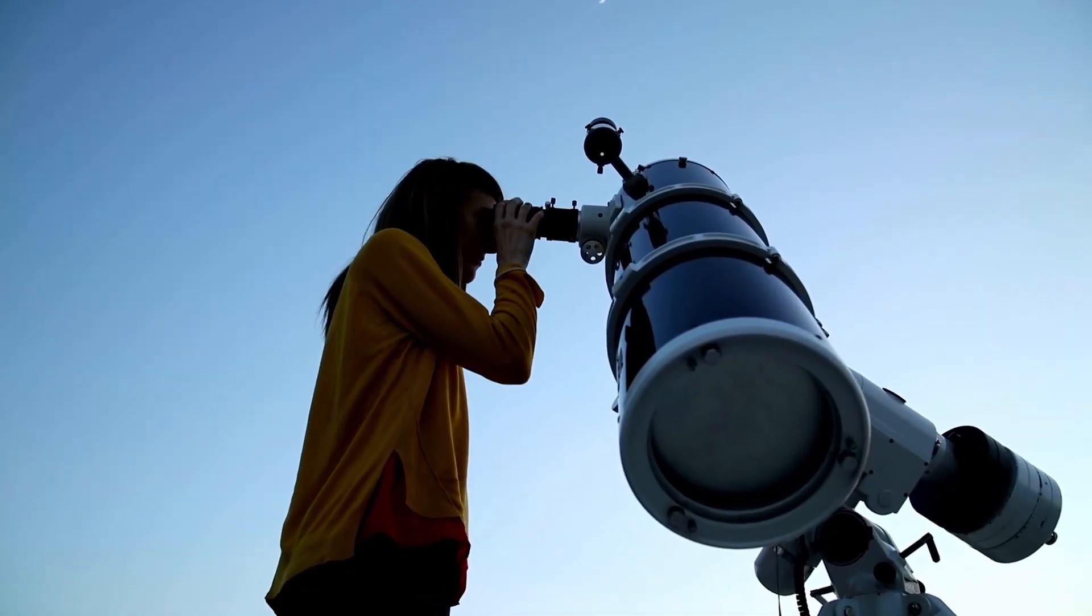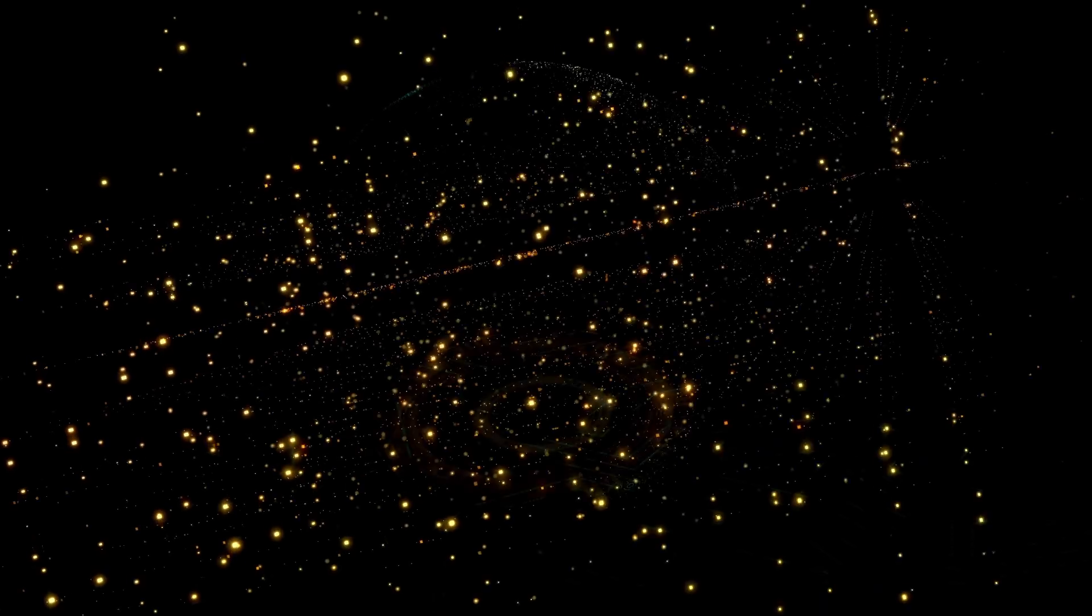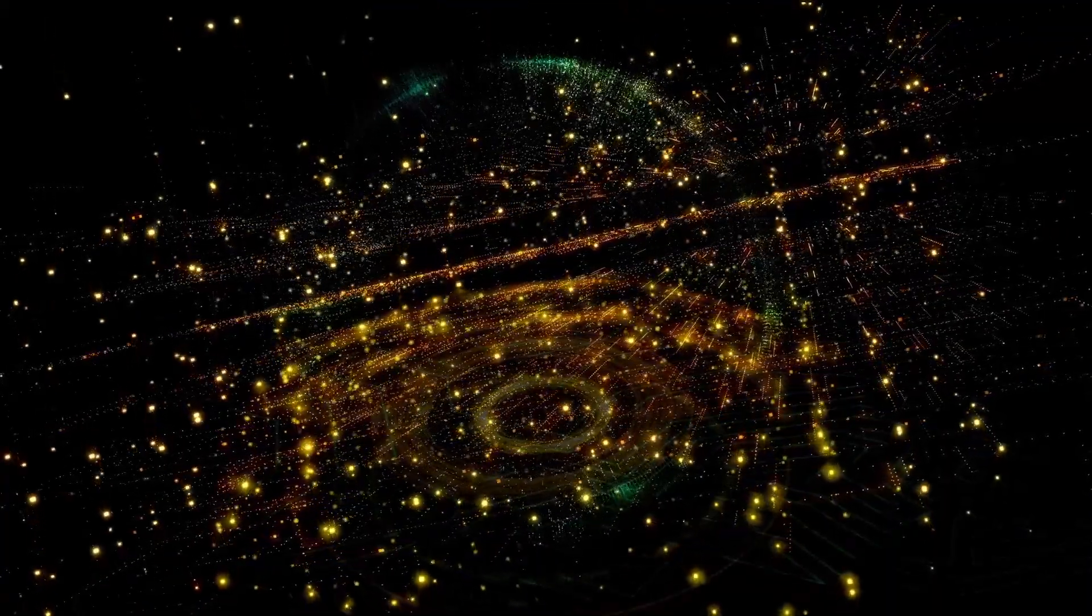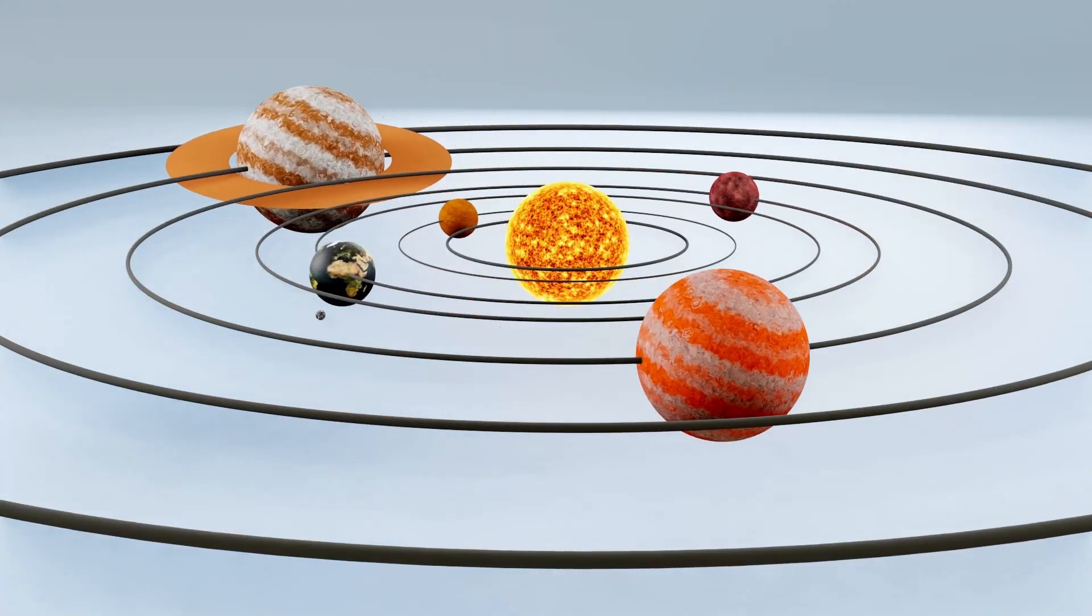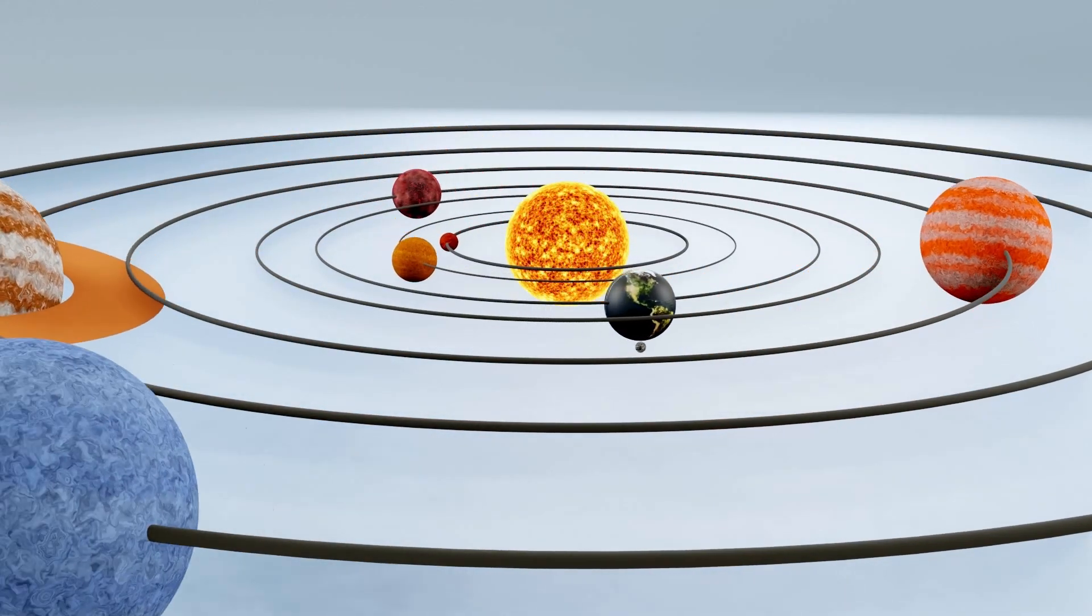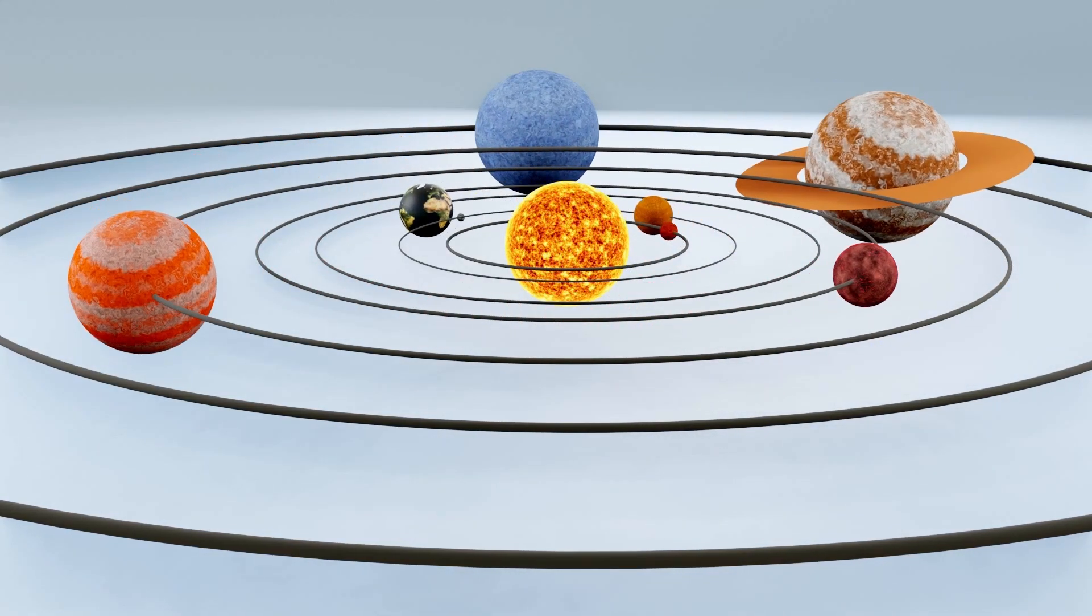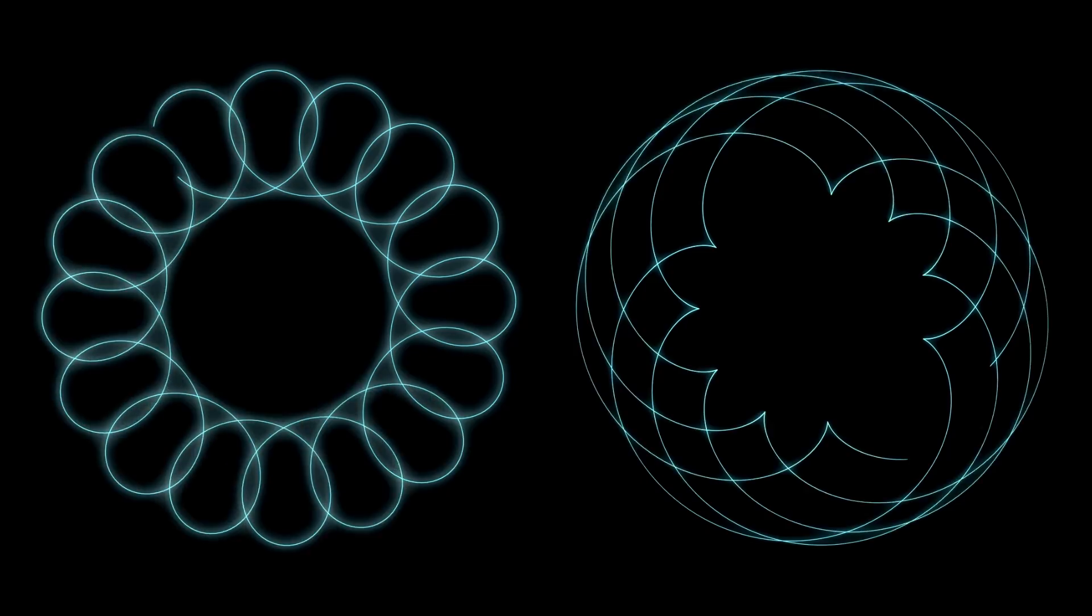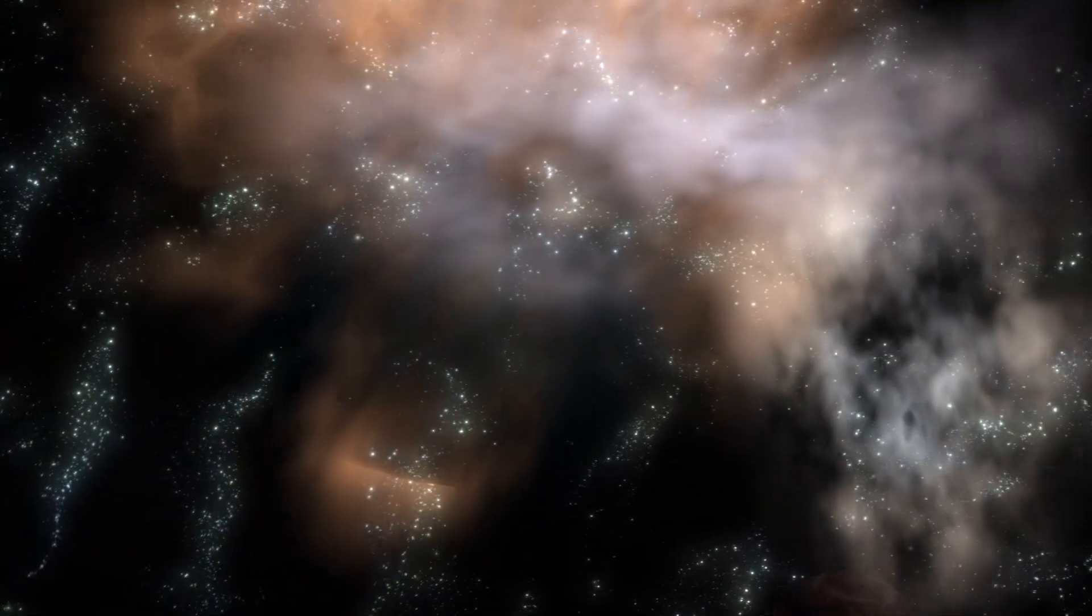An orbital mechanics specialist described the strategic implications. These aren't random trajectories resulting from a breakup. These are calculated approach vectors, designed to reach Earth from different directions simultaneously. It's classic military doctrine, approaching a target from multiple vectors to divide defensive attention and complicate response. Current projections show both fragments will arrive at Earth within a six-hour window of each other, approximately 18 to 21 days from now. Fragment A will reach Earth orbital distance first, followed by fragment B arriving from a completely different direction, while fragment A is still in our vicinity.